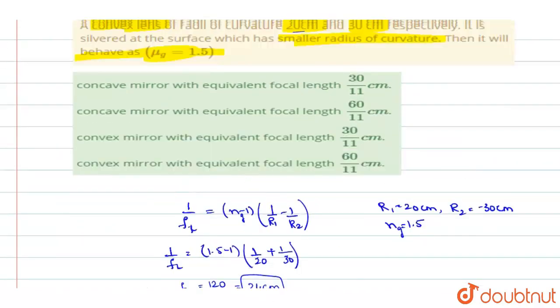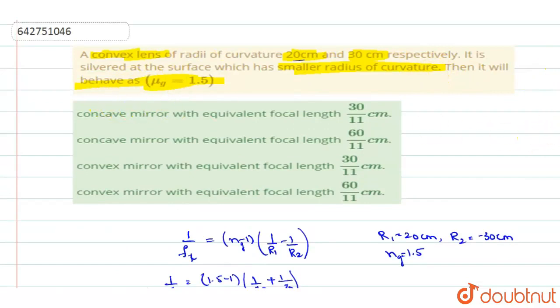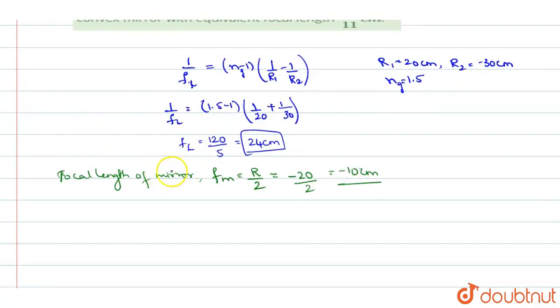Now this combination acts like or it behaves like they are asking, so we shall find the combination of these two focal lengths. So the combination focal length, if we are writing it as 1 by f equivalent, is 1 by f1 plus 1 by f2. Here f1 is lens and f2 is mirror. So we will write it as 1 by fL plus 1 by fM plus the other surface, one more lens you will have. So that will be 1 by fL.